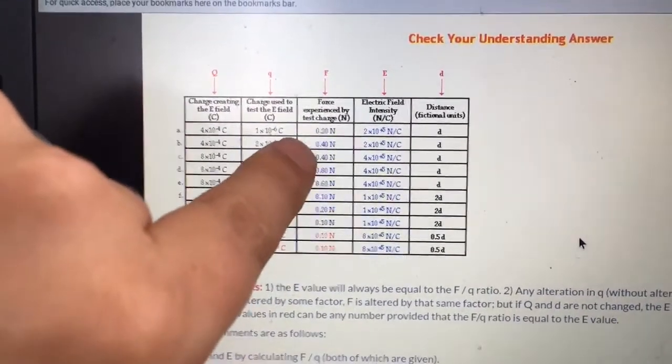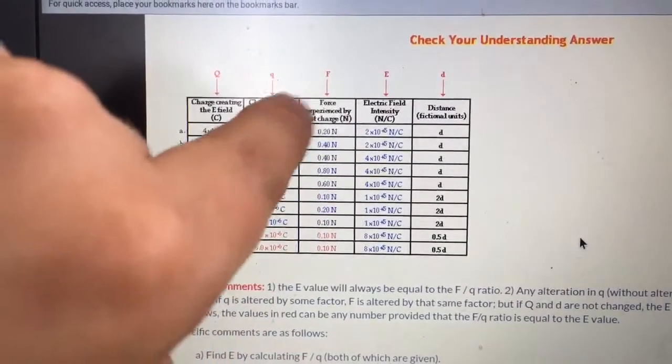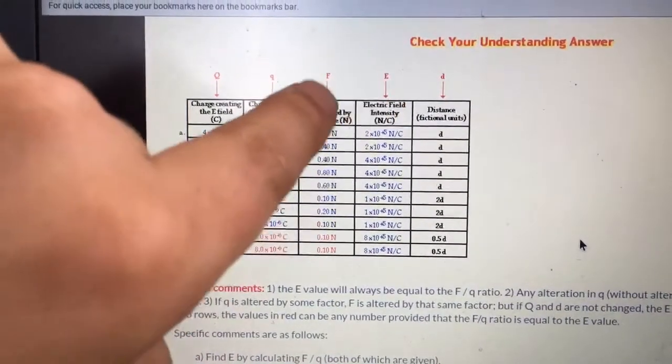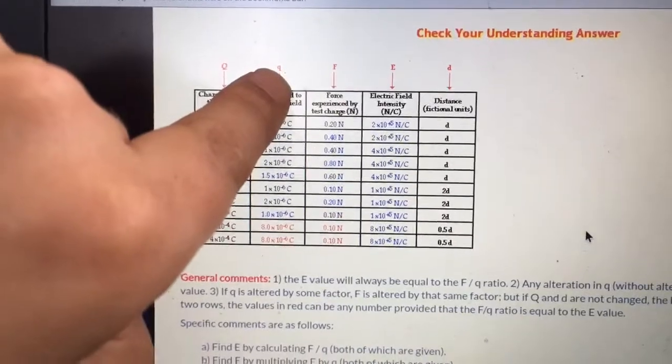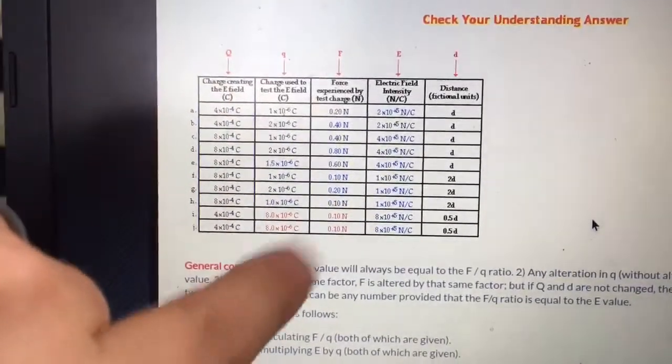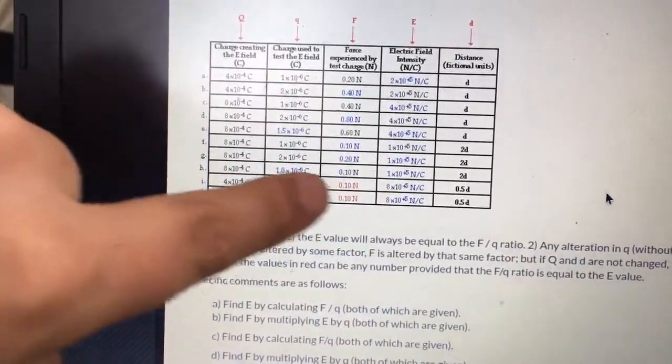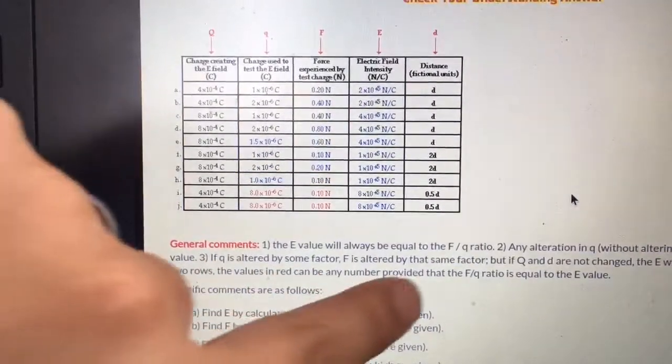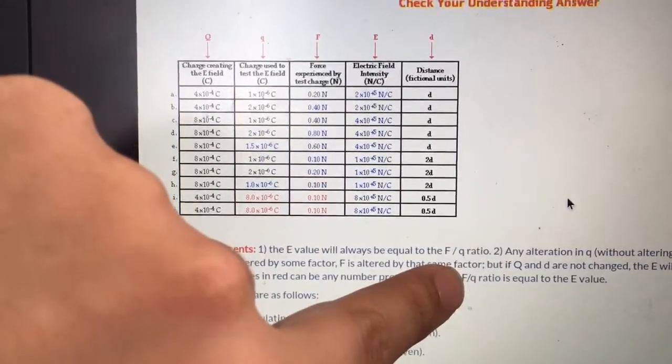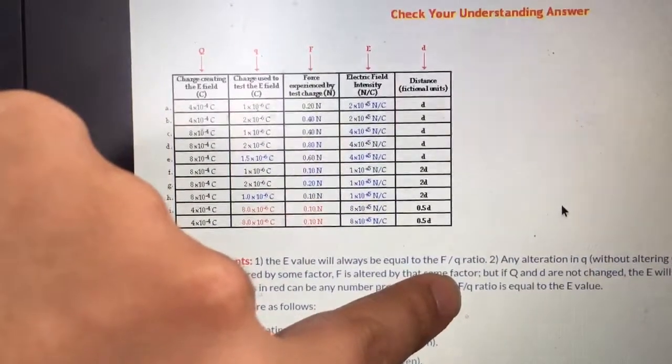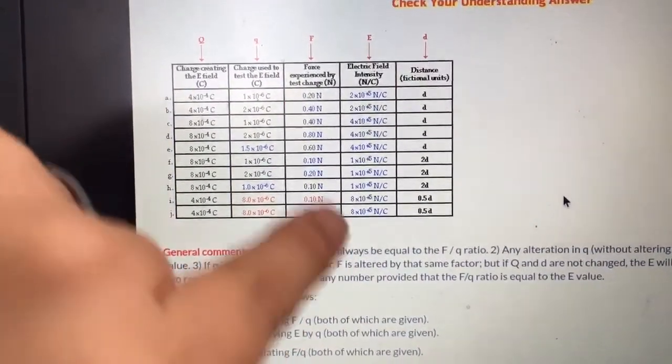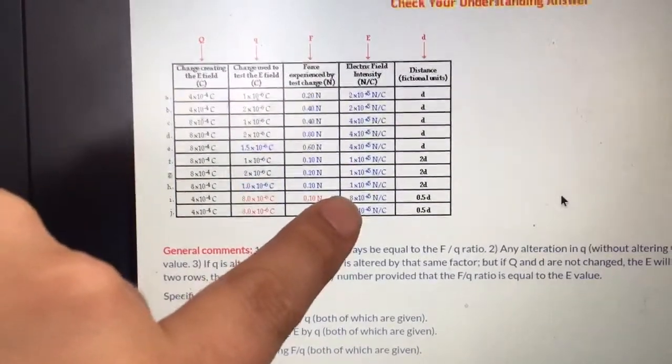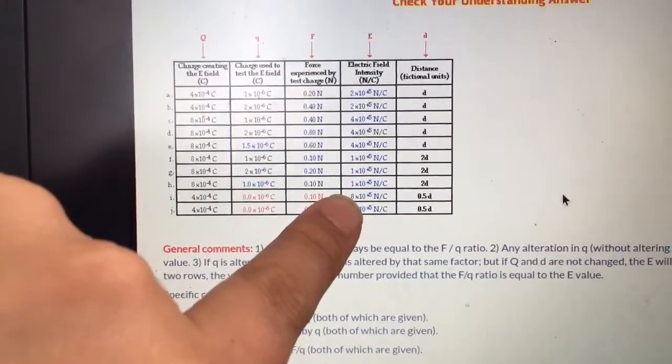You're basically given two of the three parts of the E equals F over Q equation, and you just have to solve for the other one. The only place where you don't get that is down here. So it says the values in red can be any number provided that the F divided by Q ratio is equal to the E value.